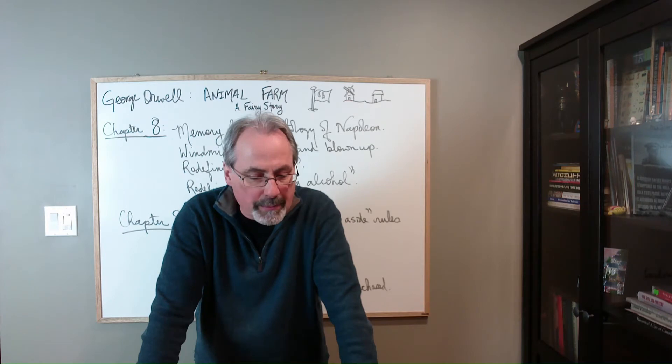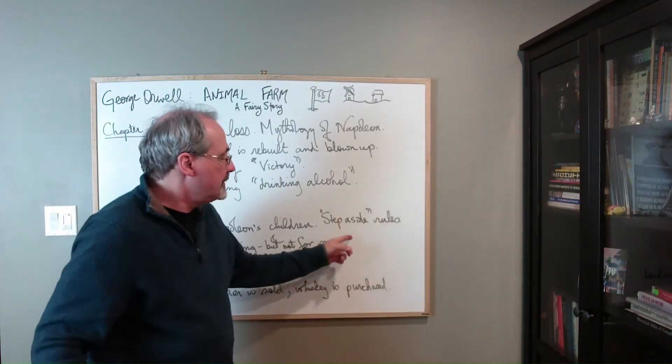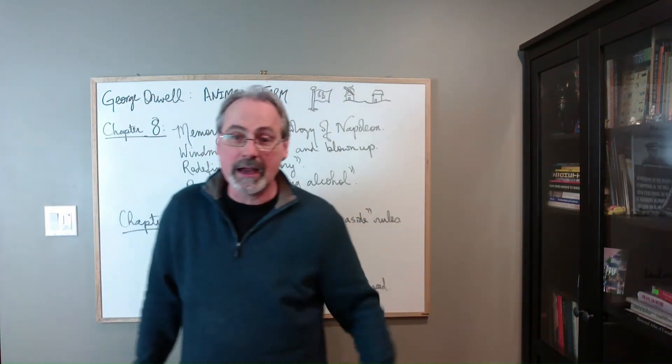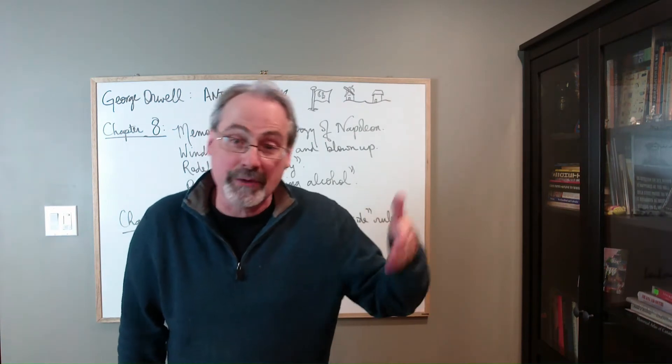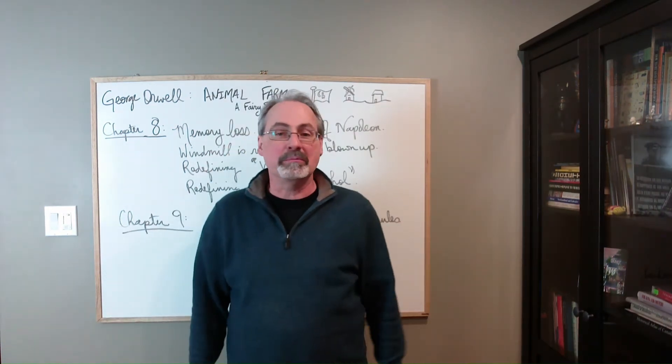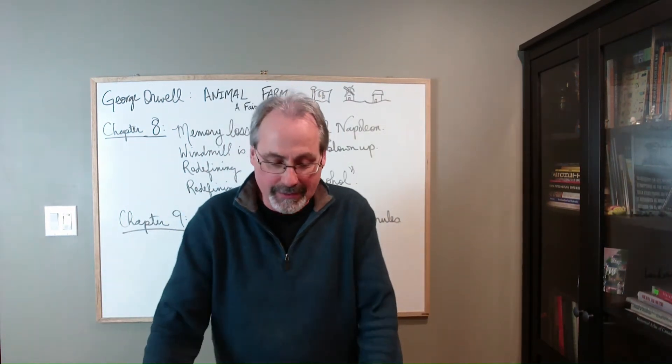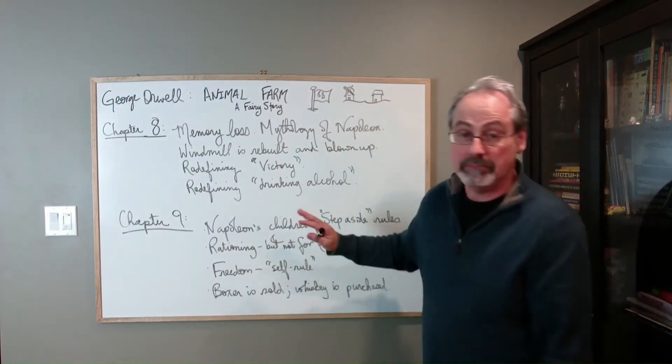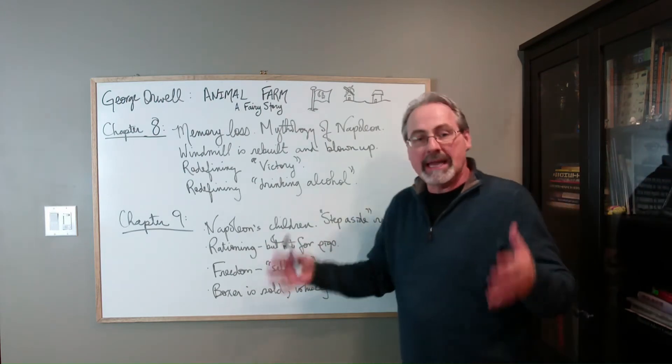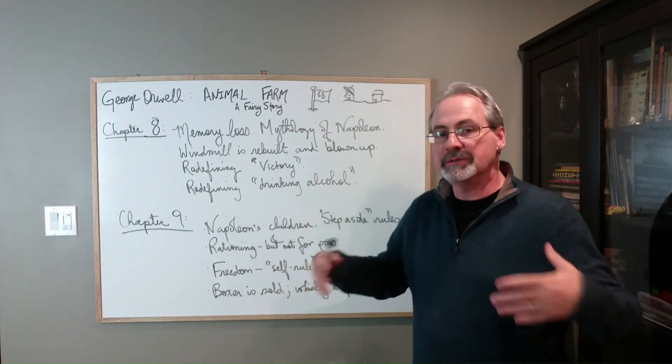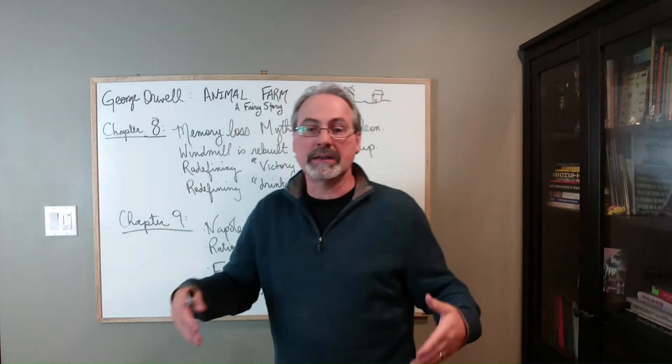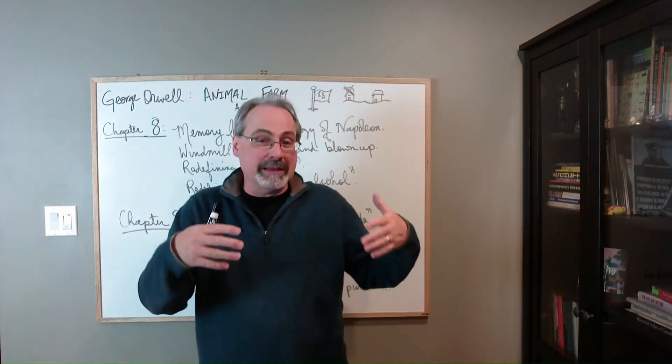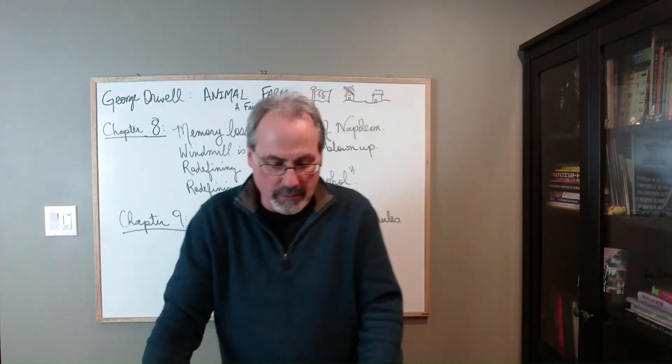And new rules come into place, right? And you have the step aside rules. So when any animal encounters a pig, anybody other than pigs get out of the way of the pigs. And rationing occurs. So rationing, but not for the pigs. So again, power, privilege being just further and further entrenched.